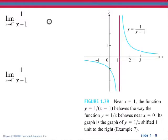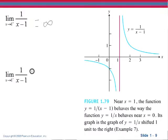So we can say that the limit as x approaches 1 from the right of 1 over x minus 1 is infinity. And the limit as x approaches 1 from the left of 1 over x minus 1 is negative infinity.